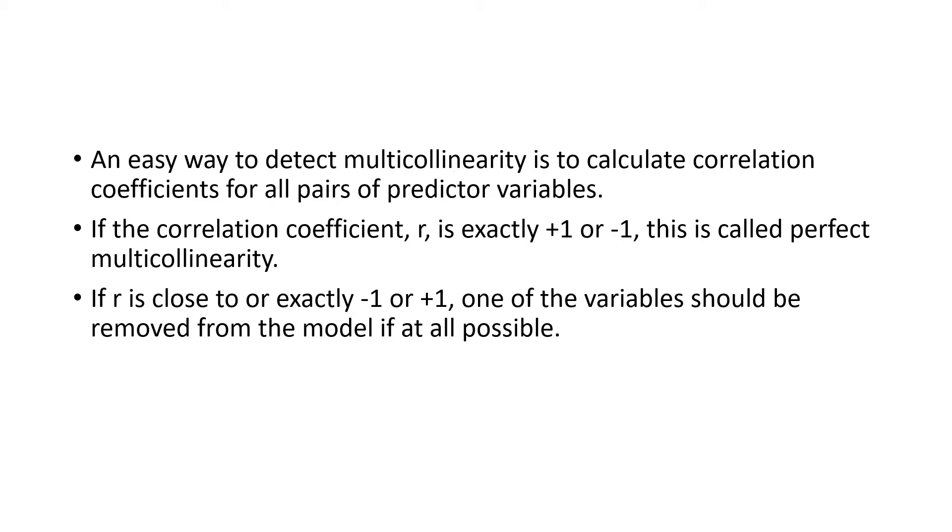So that is the difference between positive and negative, and if your r is close to or exactly minus 1 or plus 1, you can remove certain variables from your models and check whether after you have transformed your model, your model is still facing the issue of multicollinearity.